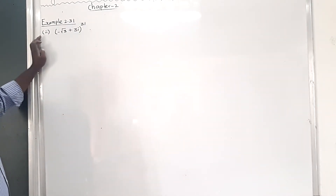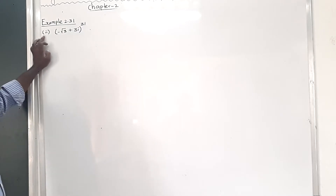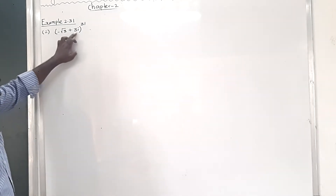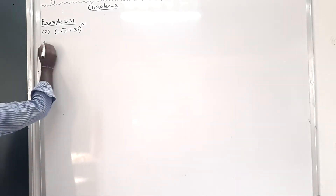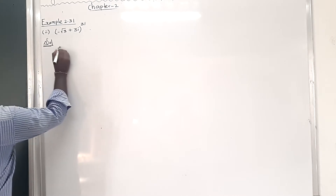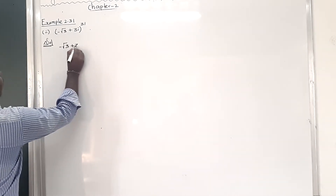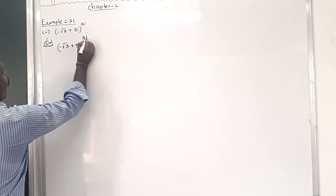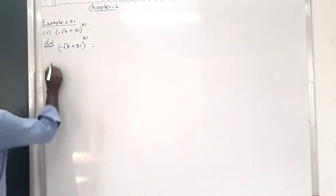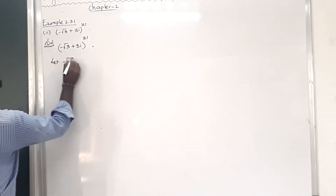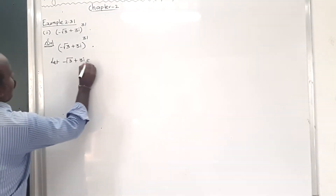Example 2.31, second subdivision: (-√3 + 3i)^31 — find all the values of this complex number. First, to form the polar representation, let us consider the value of (-√3 + 3i) equal to r(cos θ + i sin θ), which is the general form of the polar representation.